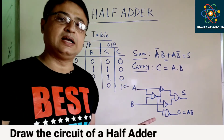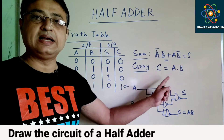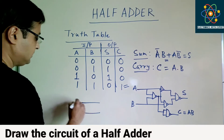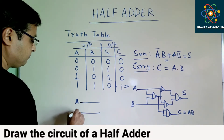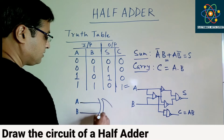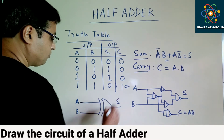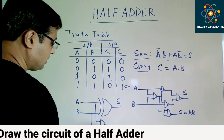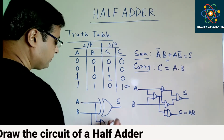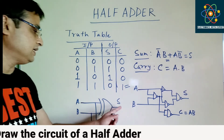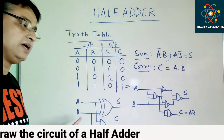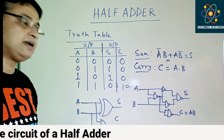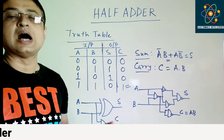You can also draw this circuit using an XOR gate and an AND gate. The inputs are A and B — draw an XOR gate to get the sum output, and an AND gate to get the carry output. This is the simplest circuit of a half adder using an XOR gate and an AND gate.